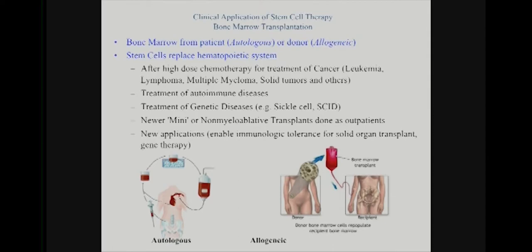Sometimes the transplant is from the same patient — autologous — sometimes from another patient. The goal is to replace the hematopoietic system. For a lot of cancers — leukemias, lymphomas, multiple myelomas, and solid tumors — the best strategy will be to wipe out everything that's there and then do a transplant, reconstituting the immune cells previously taken from that same patient. Some autoimmune diseases are treated this way as well: wipe out the immune system that's killing the patient and start fresh.